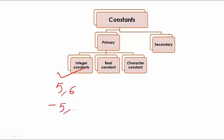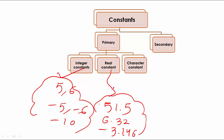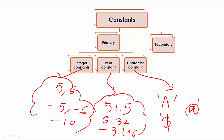You can have integer constants — for example, numbers 5, 6, -5, -6, -10; all these whole numbers are integer constants. You can have real constants — for example, 51.5, 6.32, -3.146; these are real constants because they have a decimal point. And character constants in C are placed inside single quotes — for example, 'a', '$', '@' are all character constants.